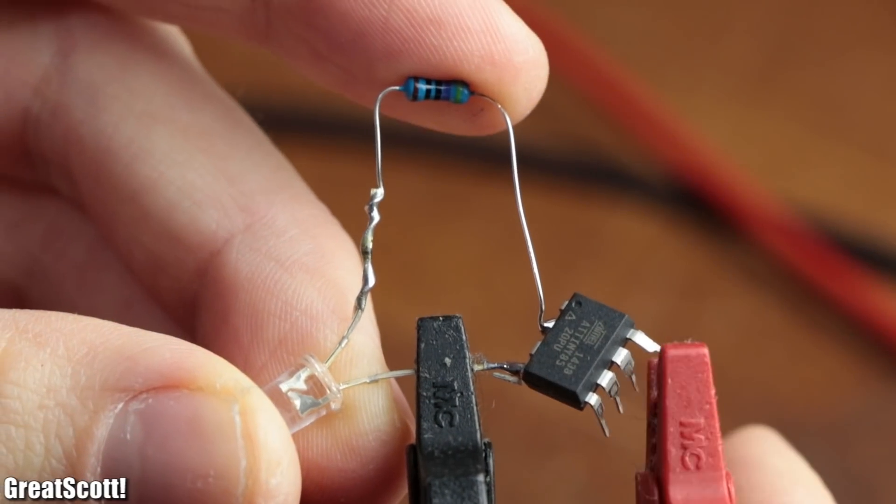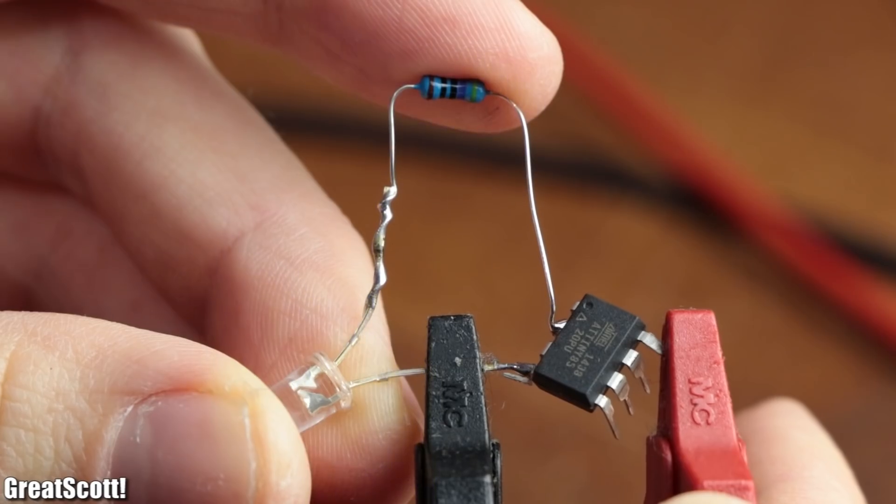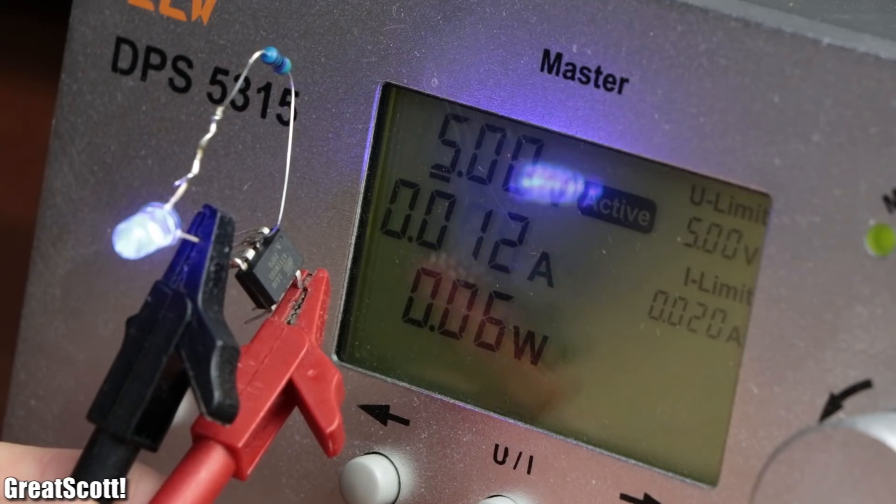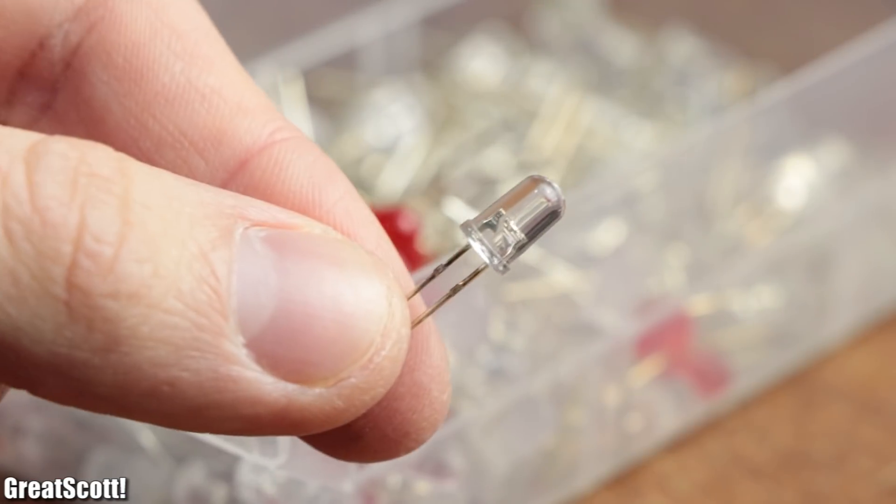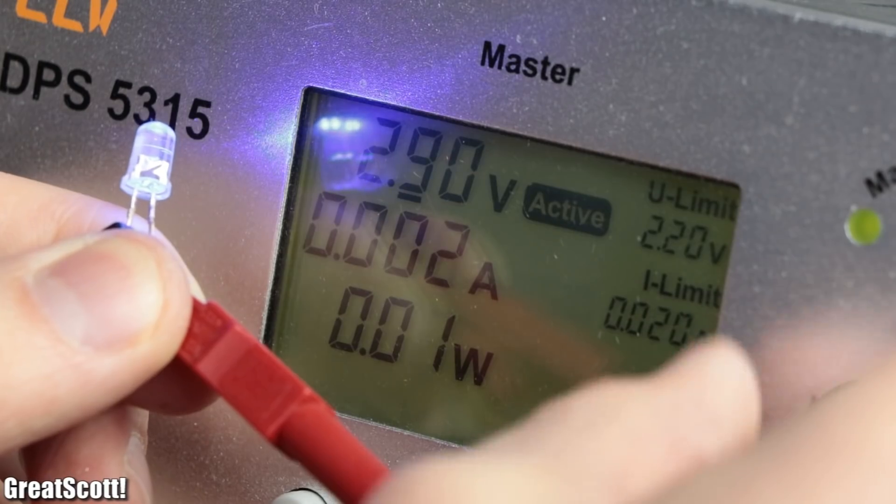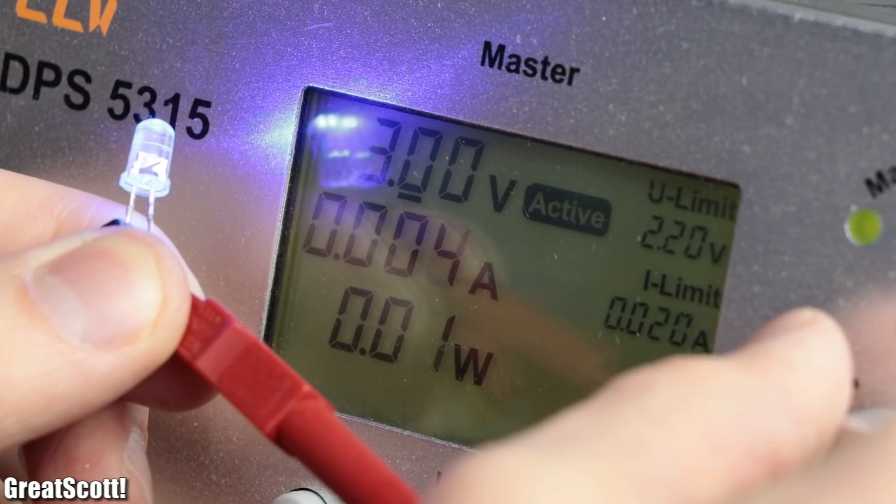To start off, let's replace our ATtiny load which draws a variable current between 8 to 12 milliamps at 5 volts with a simpler constant load like an LED. This blue one draws around 5 milliamps at 3 volts.